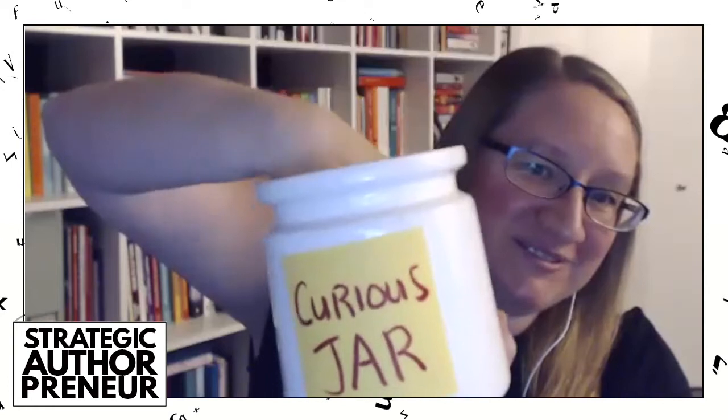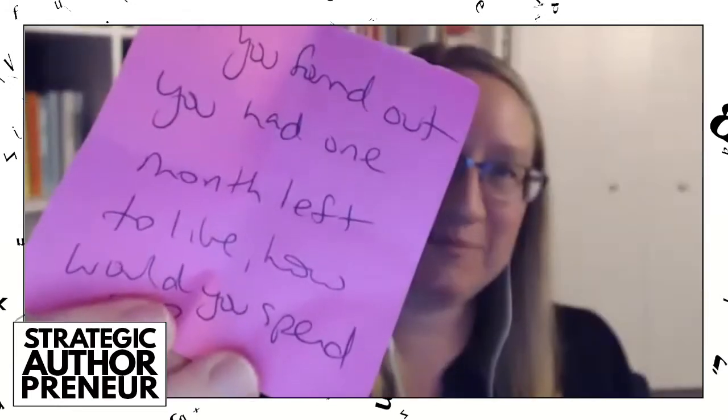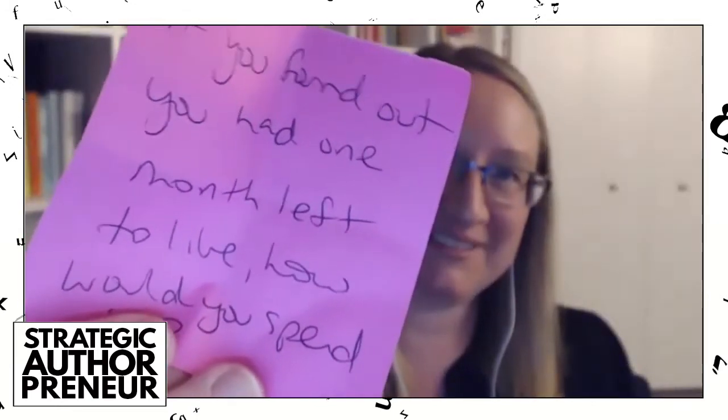We are going to visit the curious jar and find out what question we're going to be tortured with today. As usual, I will dig around — you tell me when to stop. Stop now. A pink one today. If you found out you had one month left to live, how would you spend it? Oh shoot. I knew this was the kind of question about the meaning of life and very profound stuff. Yeah, it's a little bit on the deep side, but there we go.